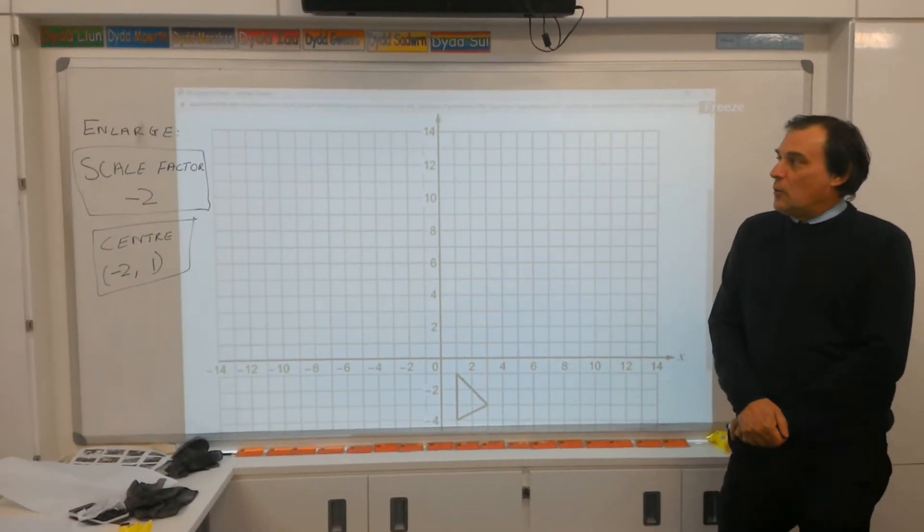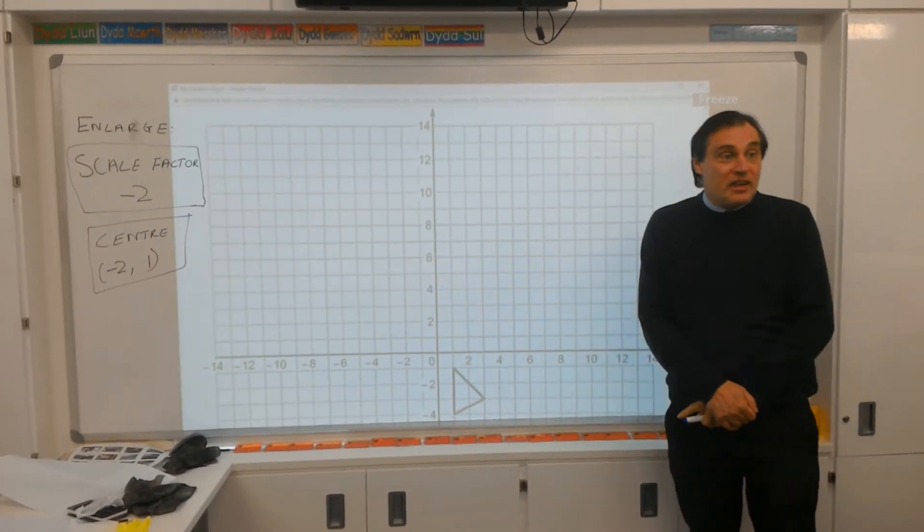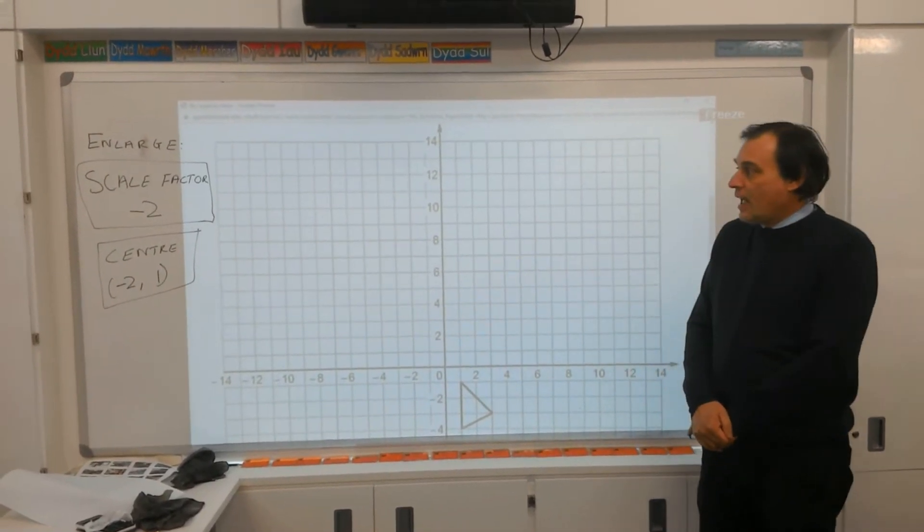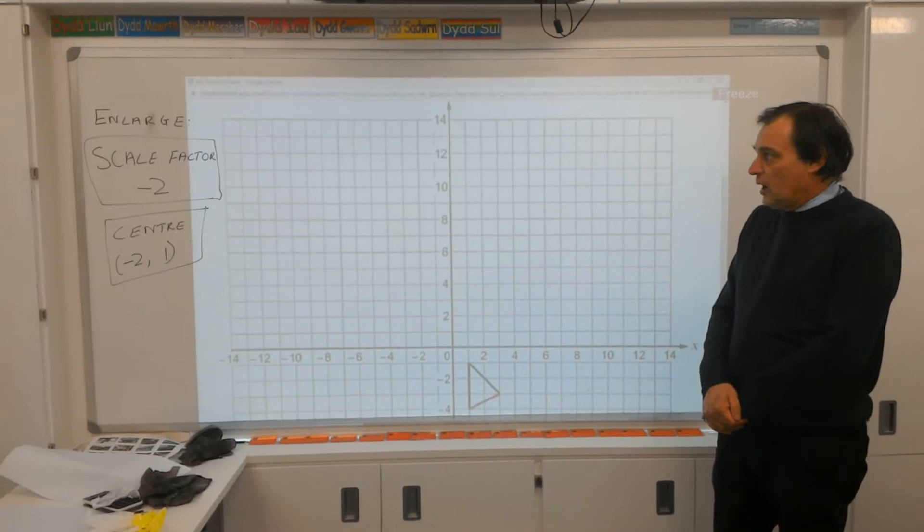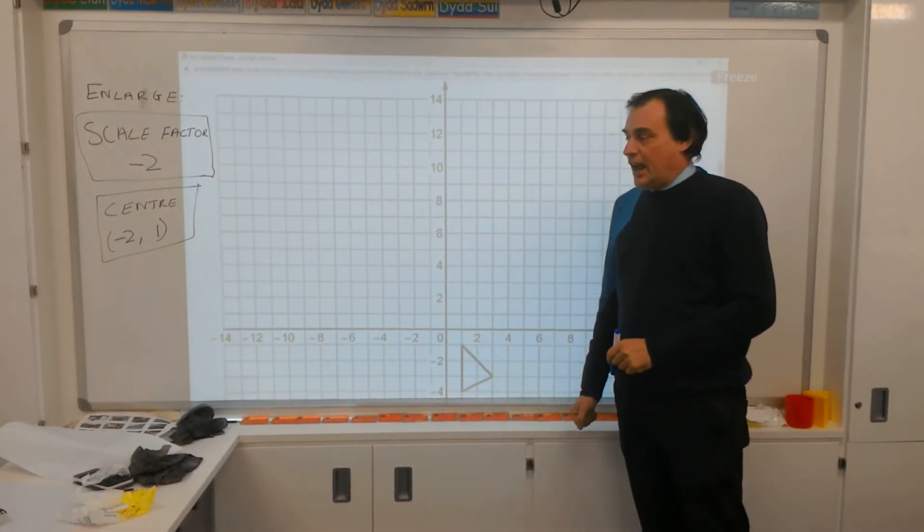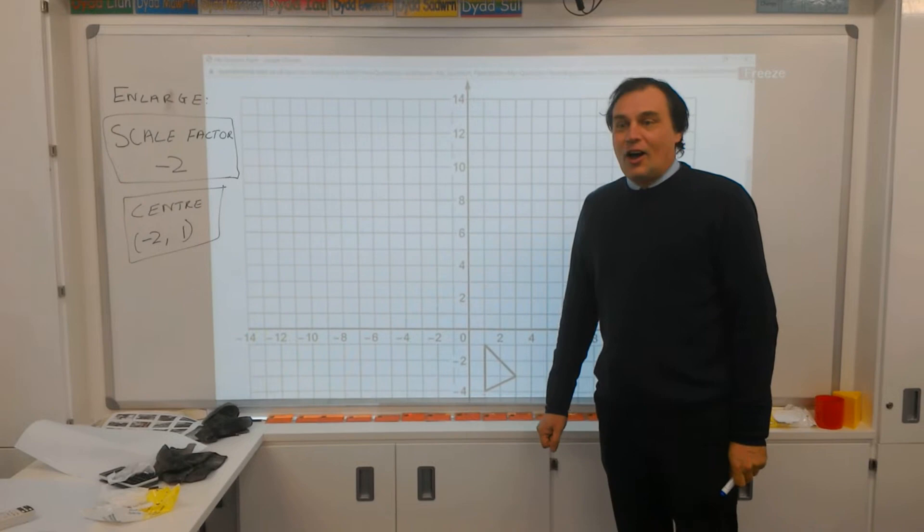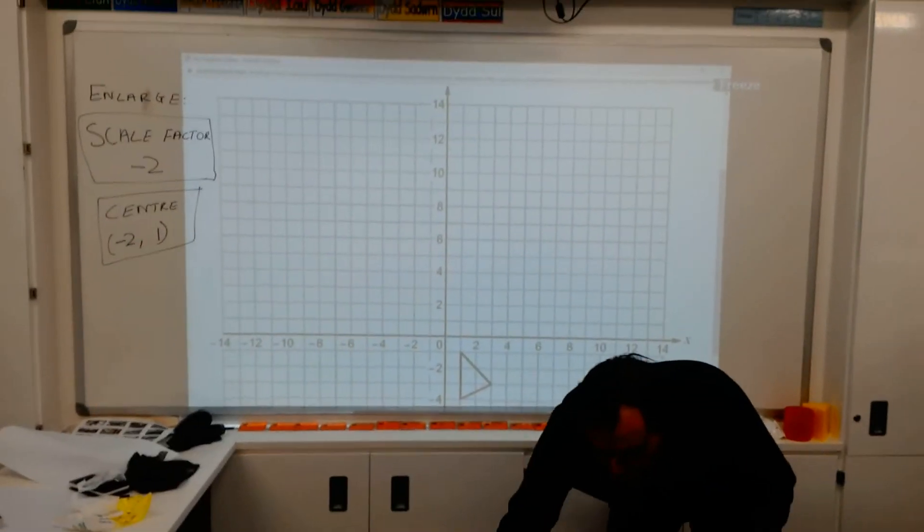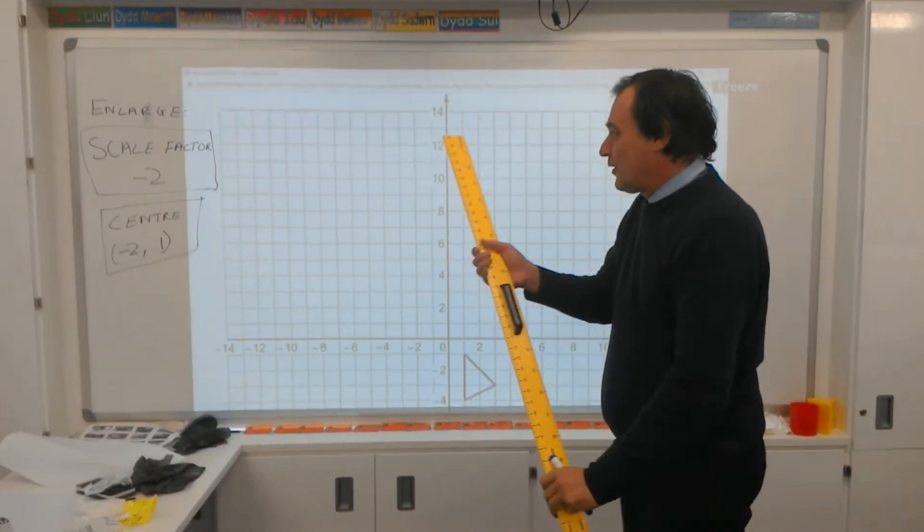So, really tricky topic today, which is enlargement with a negative scale factor and a centre as well. So this is as bad as it gets. Okay, so to do that, I'm going to need a ruler. Right, here's the ruler. We've got the ruler.